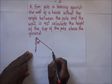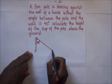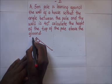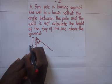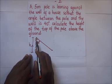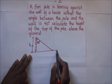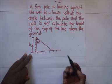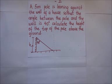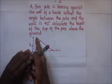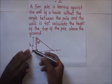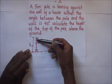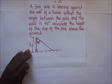This is the top of the pole and that is the bottom of the pole. They are asking us to find the height of the top of the pole above the ground. This is our ground down here. Looking at our sketch, we realize that it forms a right angle triangle, and to get this height we use trigonometry.